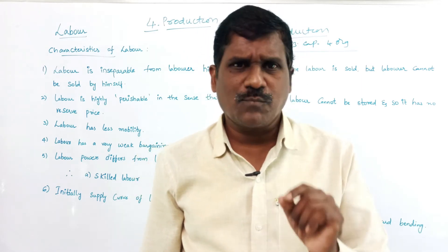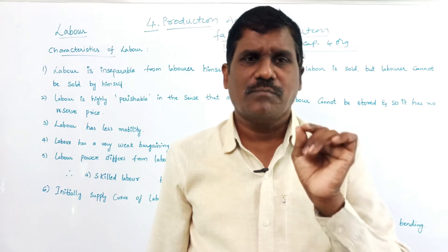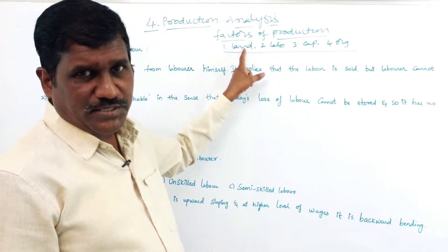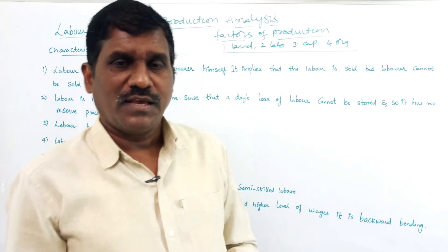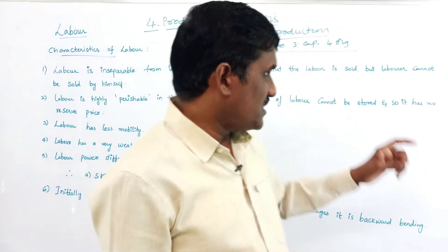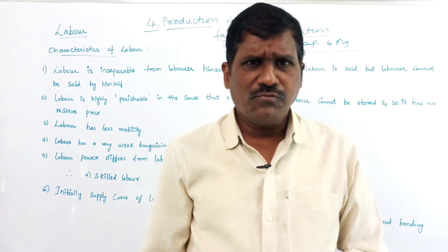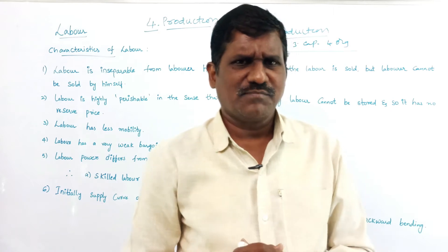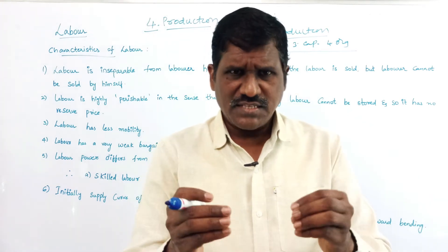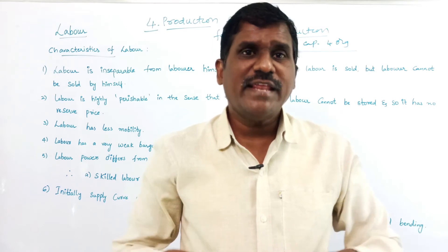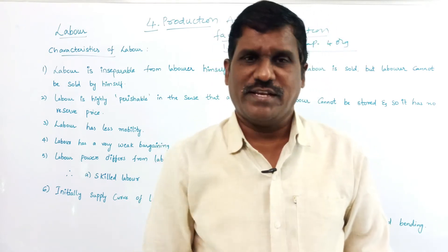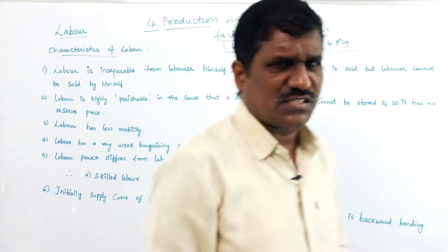By using these four factors of production, only we can get some goods and services — production is possible. The first factor was already completed. In this video, I am going to analyze labor — the characteristics of labor. This is the second and important factor. If profits or losses come to the organizer, it totally depends upon the labor.